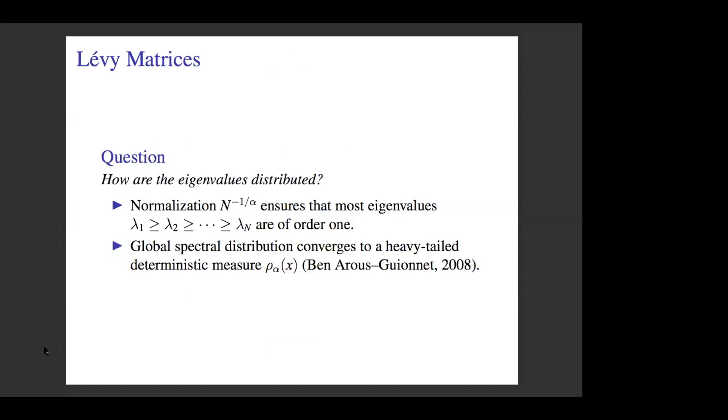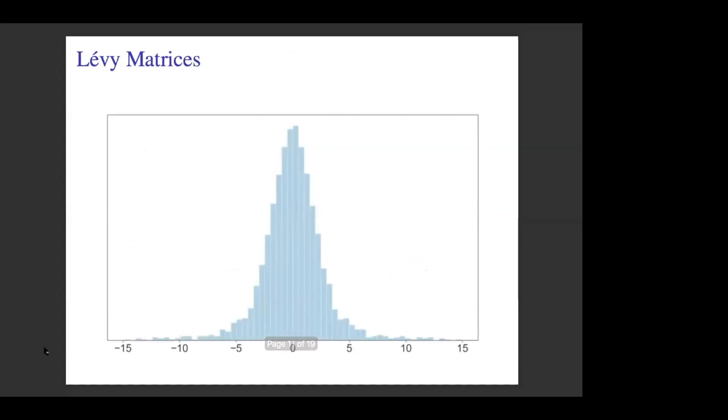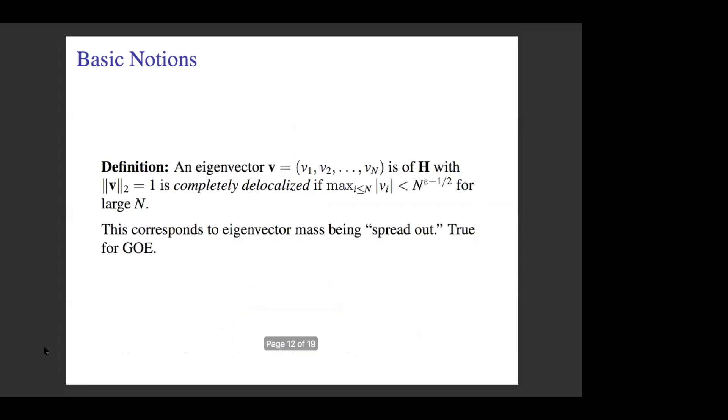I've told you about the eigenvectors, and now I want to discuss the eigenvalues very briefly. This normalization we chose ensures that everything behaves nicely as N goes to infinity, and we get convergence to a deterministic global spectrum distribution. Here's a simulation - essentially, this is what you always see if you take a Levy matrix and determine its eigenvalues: you get some alpha-dependent convergence to an alpha-dependent deterministic matrix. You can see there are a lot of things near zero but also some very heavy tails. I've truncated it at 15, but if you looked at the entire graph, it would extend further.